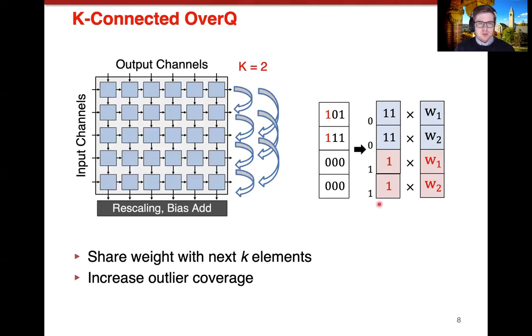The advantage here is that you increase the outlier coverage, and this shows a simple example of when that would occur. So in the standard case, K equals one, only this outlier would be able to be represented and it would just overwrite. So the second activation would overwrite the third activation here. But when K equals two, the first activation could overwrite the third activation, and the second activation could overwrite the fourth activation. So you can see how this would give you a higher outlier coverage.